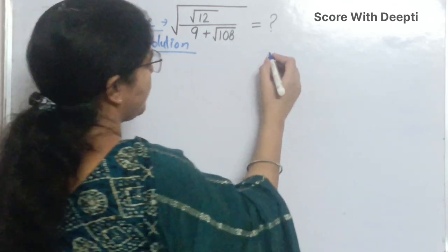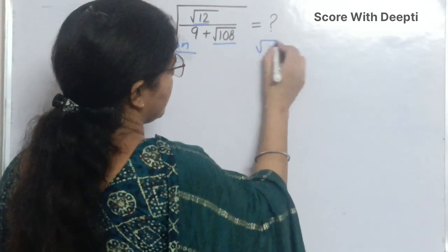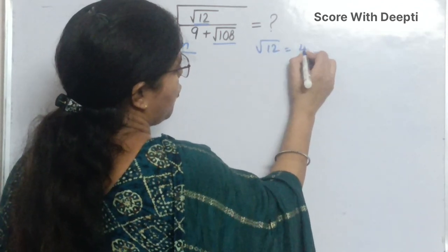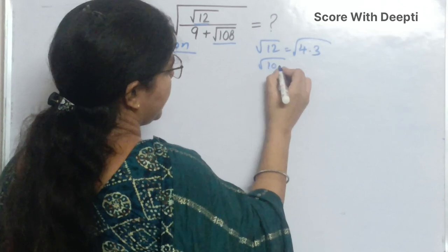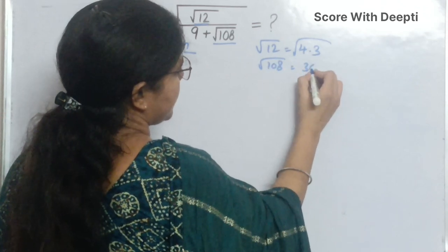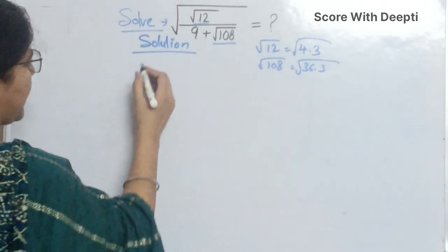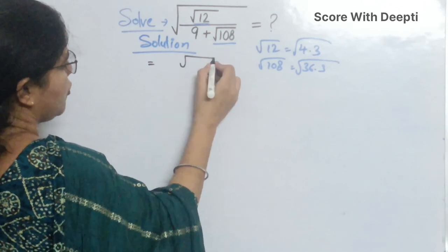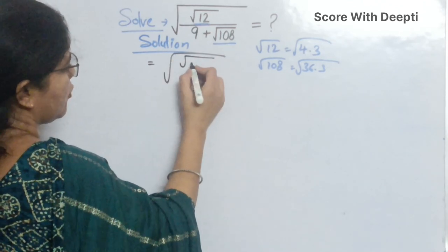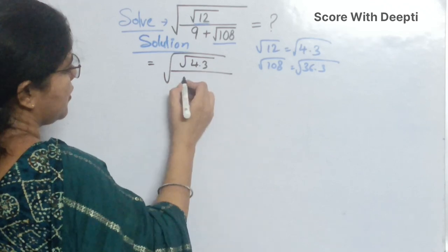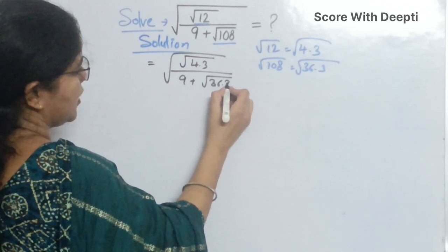Our first step: in place of square root 12 we write 4 times 3, since 4 times 3 is 12, and in place of 108 we write 36 multiplied by 3. So we write square root of square root of 4 into 3 over 9 plus square root of 36 into 3.